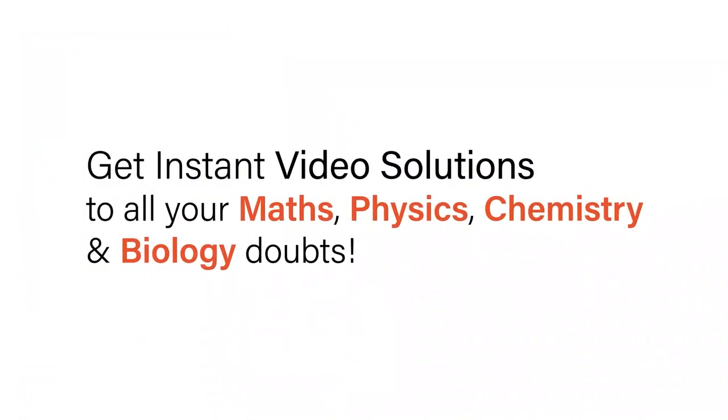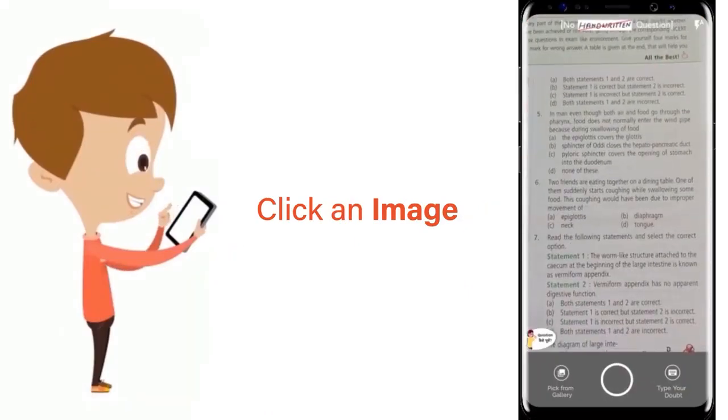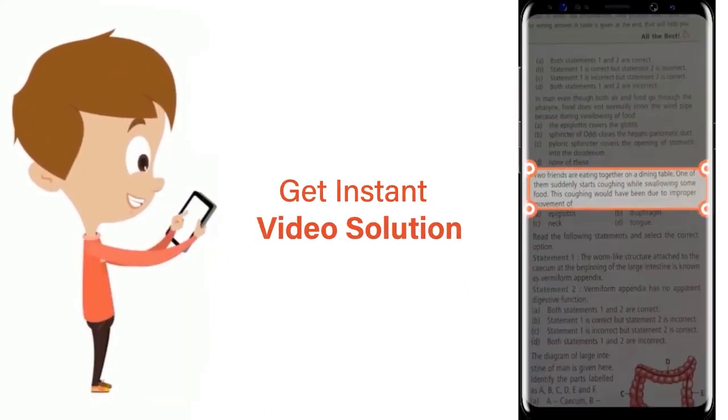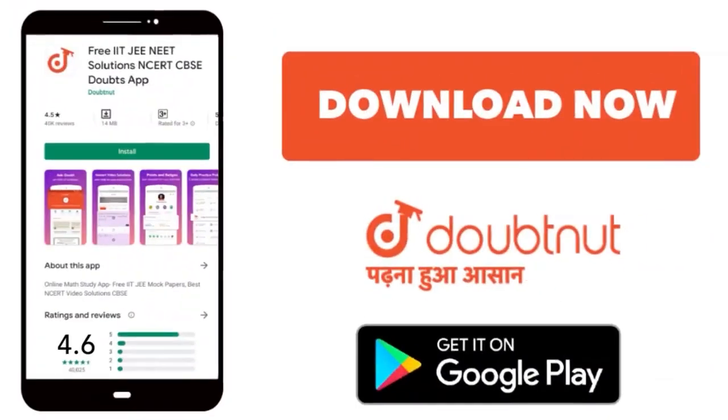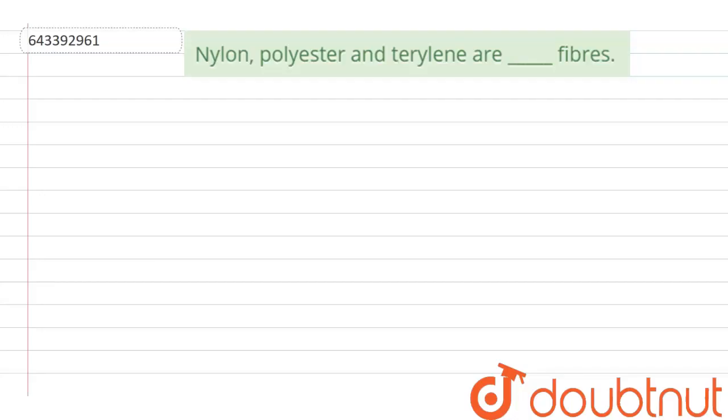With Doubtnet, get instant video solutions to all your maths, physics, chemistry and biology doubts. Just click the image of the question, crop the question and get instant video solution. Download Doubtnet app today. The question given here is: Nylon, polyester and terylene are dash fibers.